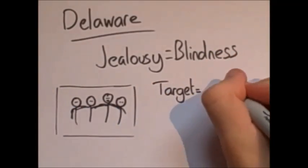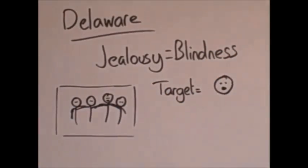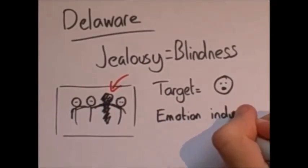But then they were told that the men were rating women based on their looks. The jealous ones couldn't find the target anymore, meaning that they were visually impaired or emotion induced blindness.